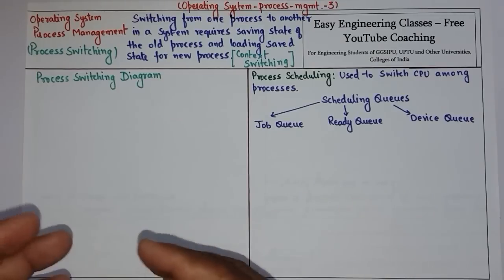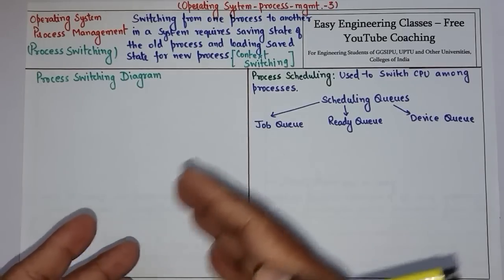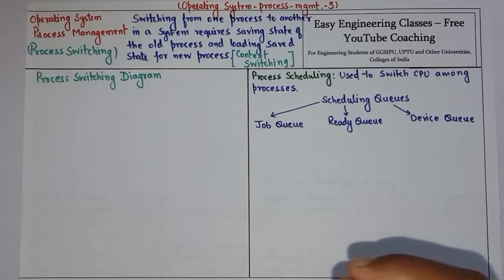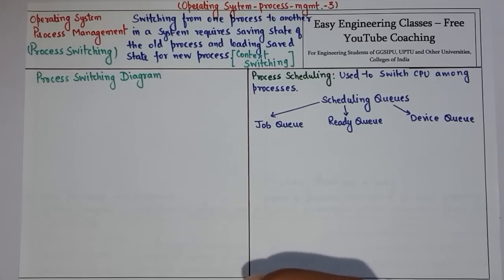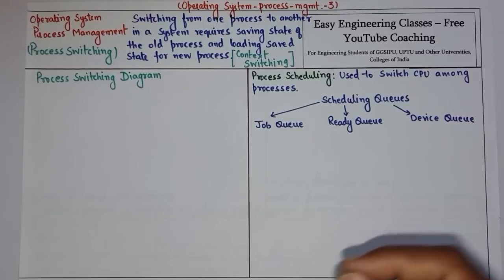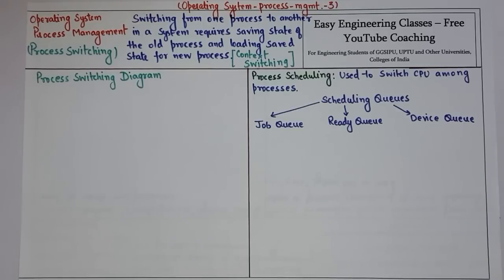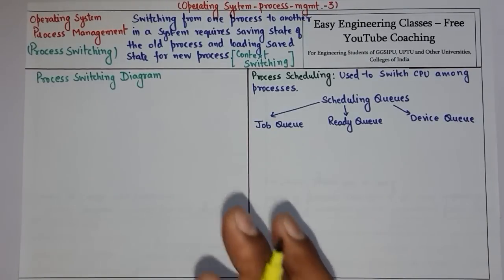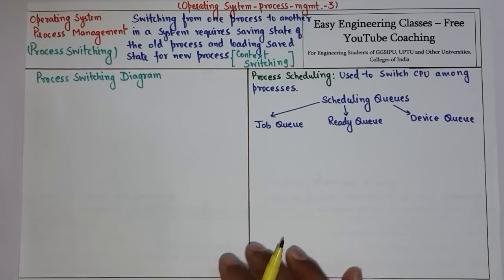Because process switching keeps on going in a continuous manner, we have to save the state of the process in the process control block that we studied in the previous lecture. We save the state of the process in the PCB, and whenever that process needs to be executed again, we load that particular saved state from the PCB. Now let's see with the help of a diagram how process switching actually works.